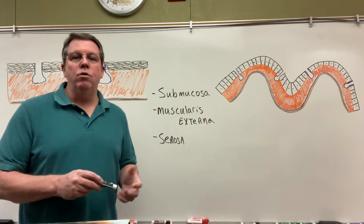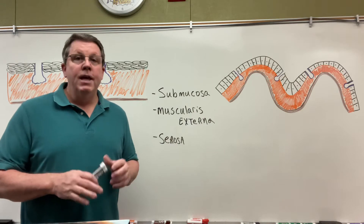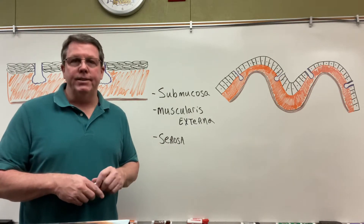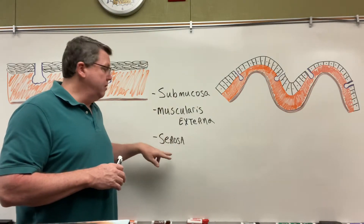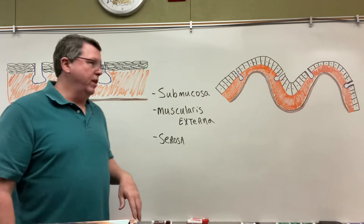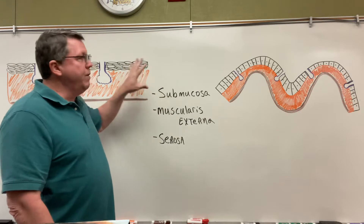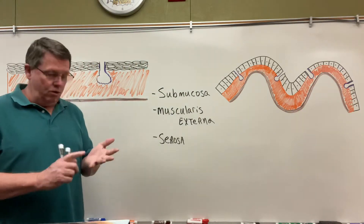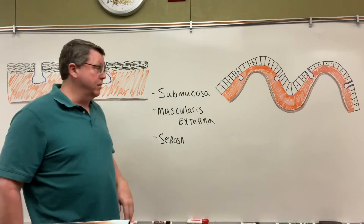Hi everybody. We're going to continue talking about digestive system histology. In another video I covered the mucosa or mucous membrane of the digestive system. In this video we're going to talk about the submucosa, the muscularis externa, and the serosa, which is the bottommost layer. Let's first review the mucosa — this is what it looks like in the oral cavity, the pharynx, the esophagus, or the anus.